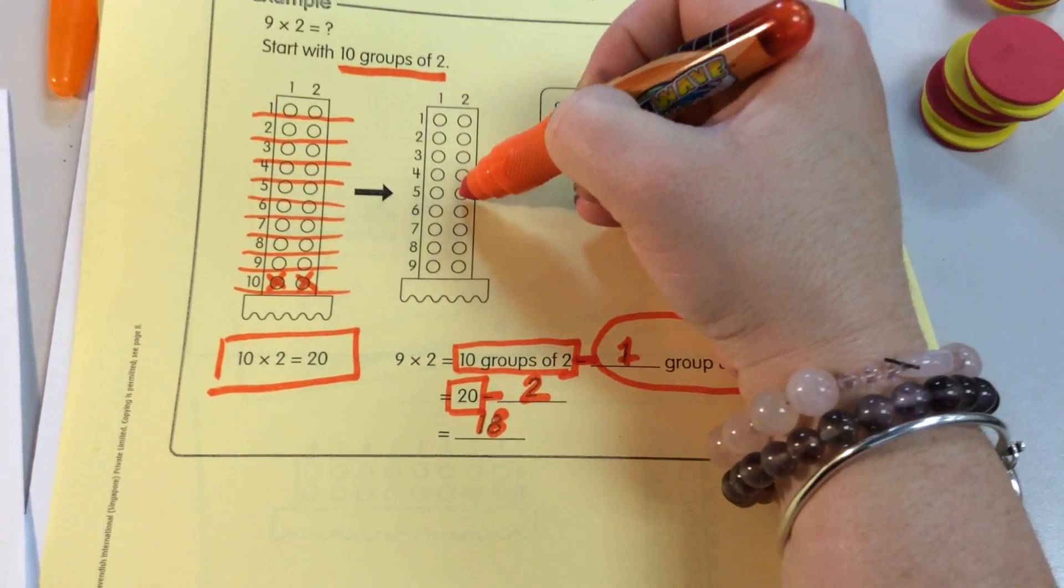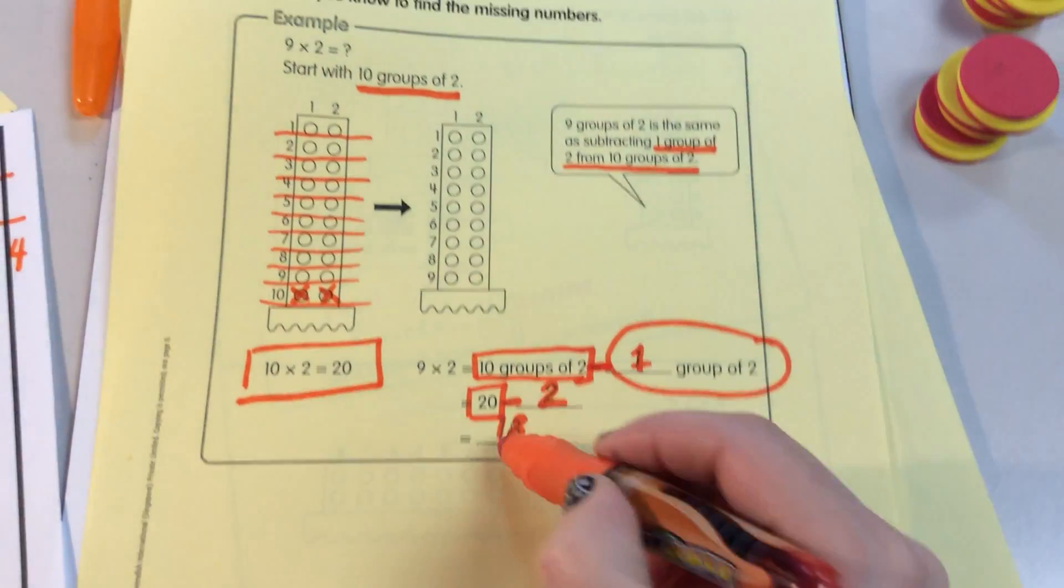And it leaves us with 18. And we can verify that and check it. 2, 4, 6, 8, 10, 12, 14, 16, 18. We see it's 18.